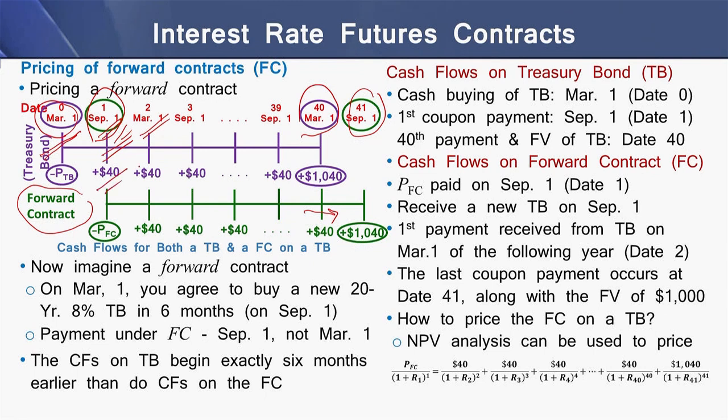The receipt of the new treasury bond also occurs on September 1. The first payment received from that treasury bond falls on March 1 of the following year, which is date 2. The last coupon payment occurs at date 41 on this forward contract, along with the payment of the face value of $1,000. Given these payments, the forward contract on the treasury bond can be priced using net present value.